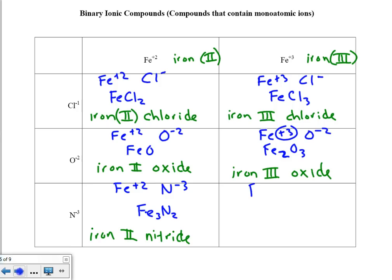Our last example here: Fe⁺³ and N⁻³. Crisscrossing properly and reducing, we have FeN. This is iron 3 nitride.